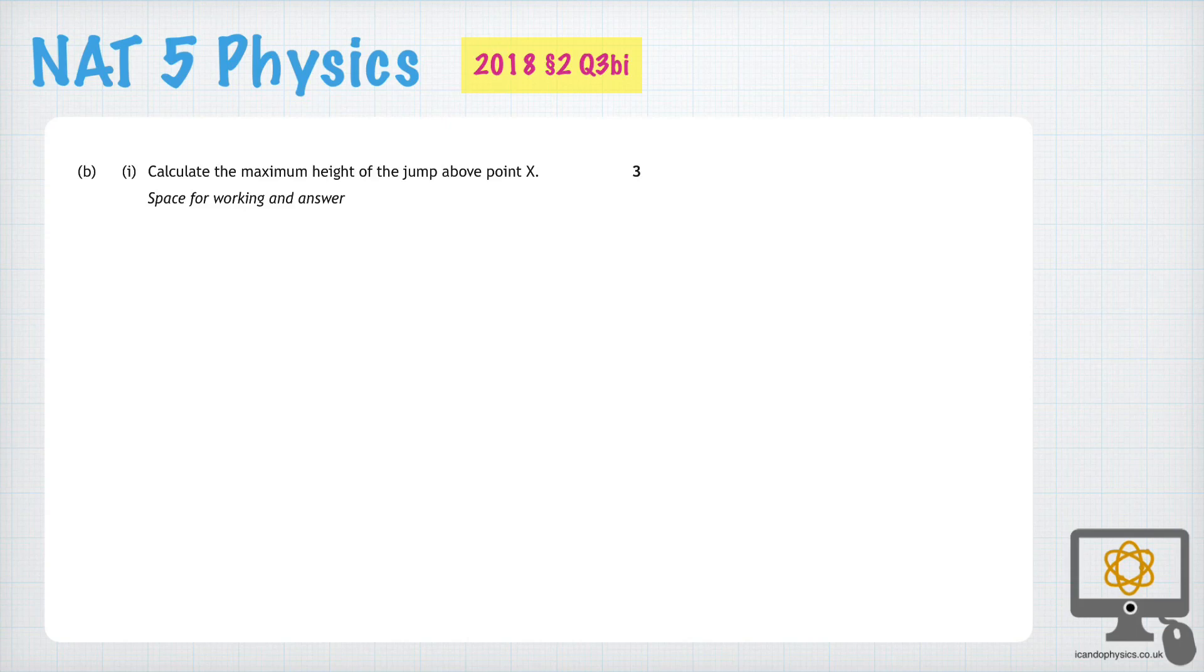3b part 1 is a question about conservation of energy. We've already determined that the kinetic energy at point x is 2400 joules. Now that kinetic energy has come from the fact that the bicycle has rolled down a slope and it's lost potential energy.